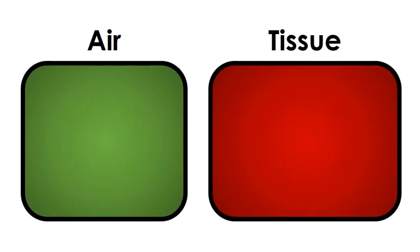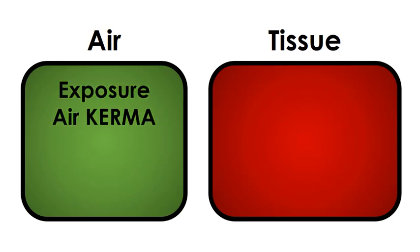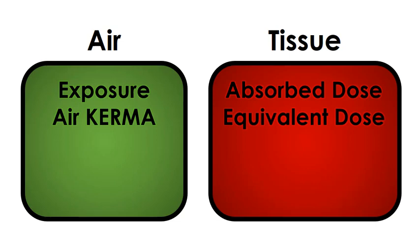The units and quantities used to measure radiation are just like this. Radiation measurements fall into two main categories: radiation in air and radiation in tissue. Radiation in air is a measure of radiation intensity, and these measurements include exposure and air kerma. Radiation in tissue is a measure of the dose, and these measurements include absorbed dose, equivalent dose, and effective dose.